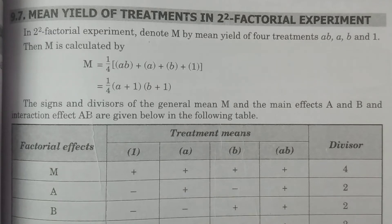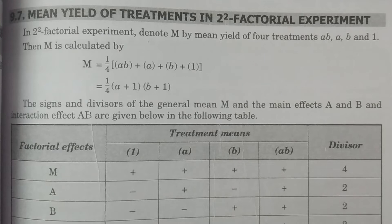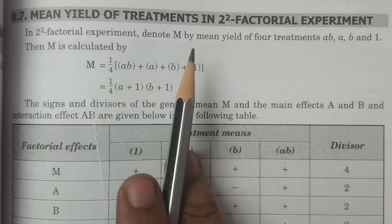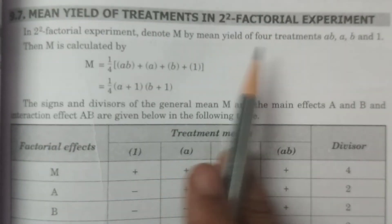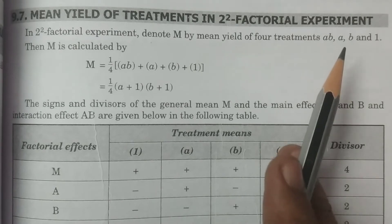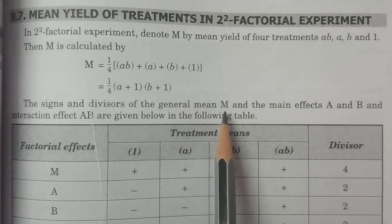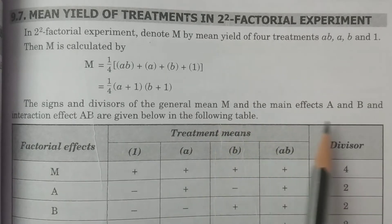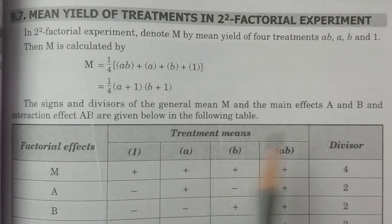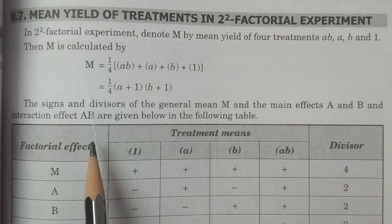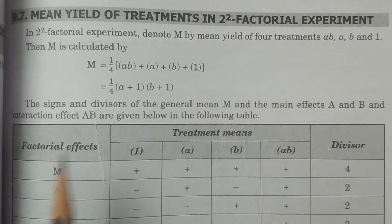Welcome to BSc Statistics students. In this class, I discuss mean yield of treatments in a 2² factorial experiment, as well as the signs of the mean yield M, main effects A and B, and interaction effect AB, which are very important.